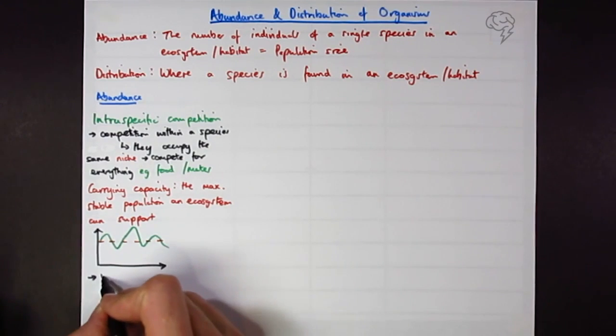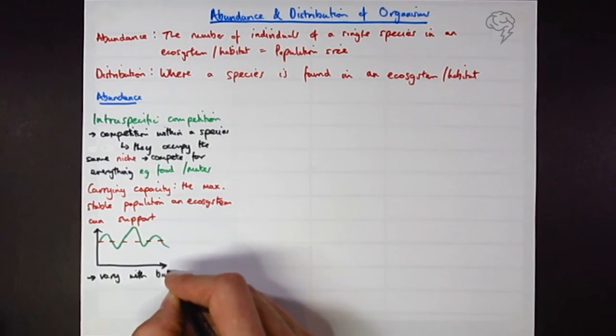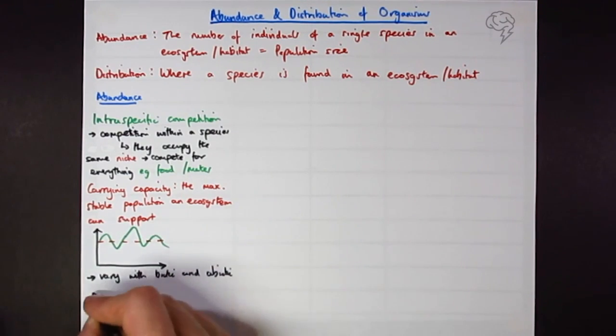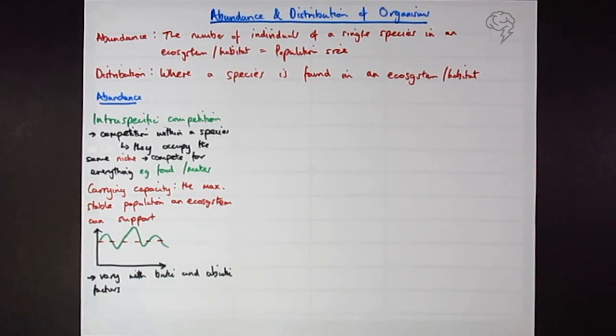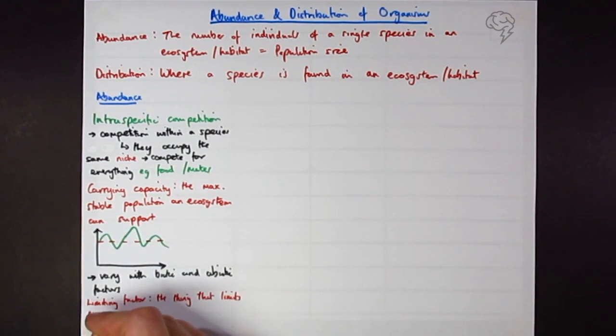Carrying capacity is going to vary. I might define limiting factor - nice biological technical term there - the thing that limits population size. This could again be biotic, so food - competition for food - or it could be abiotic. It could be nesting sites.